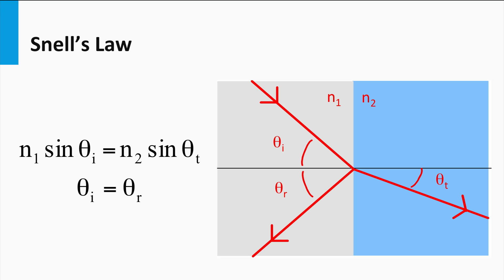First I will discuss the physical origin of reflection of light in more detail. The fraction of the light intensity that is reflected is given by the Fresnel coefficient. Consider the interface between two media with refractive index n1 and n2. A light ray is arriving with an angle of incidence in reference to the normal of the interface theta i. Part of the light is reflected at the angle of reflection theta r, which is equal to the angle of incidence.